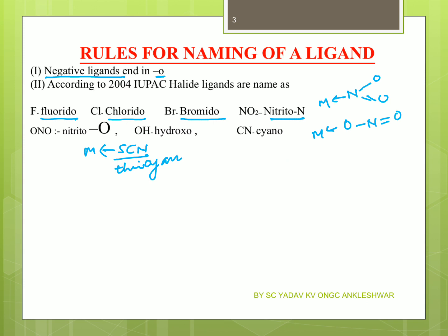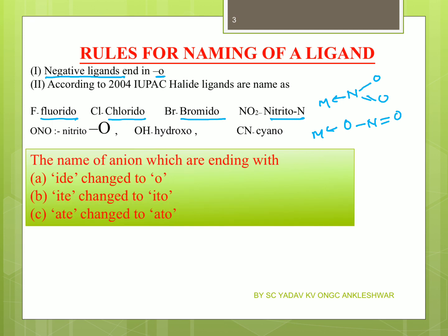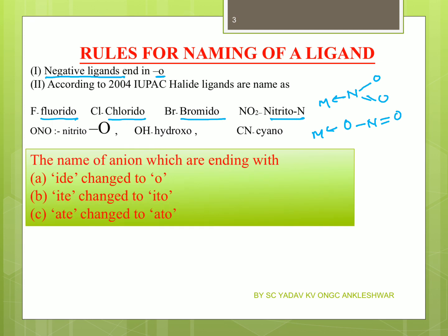Is it clear so far? The halogen atoms — how will you name them? Fluorido, chlorido, bromido, iodo. Now for negative ligands: if the ending is -IDE, change it to -IDO (e.g., fluoride → fluorido). If the ending is -ITE, change it to -ITO. If the ending is -ATE, change it to -ATO. You will do this for anions.